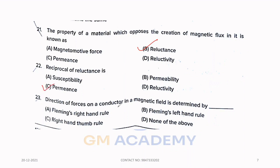Twenty-third, direction of force on a conductor in a magnetic field is determined by. This is the case of a motor. When talking about a current carrying conductor in a magnetic field, the force on it, option B, Fleming's left-hand rule.